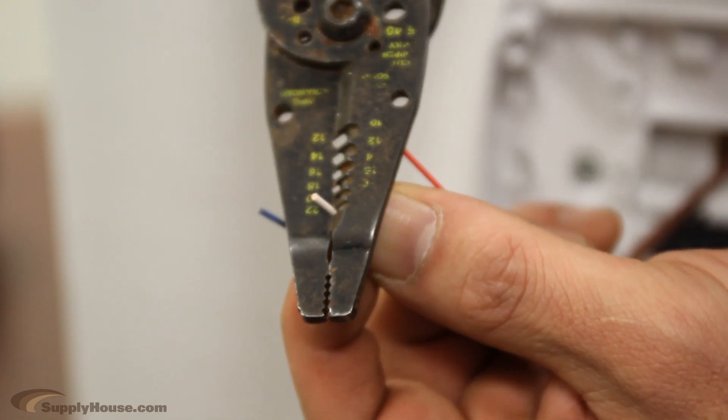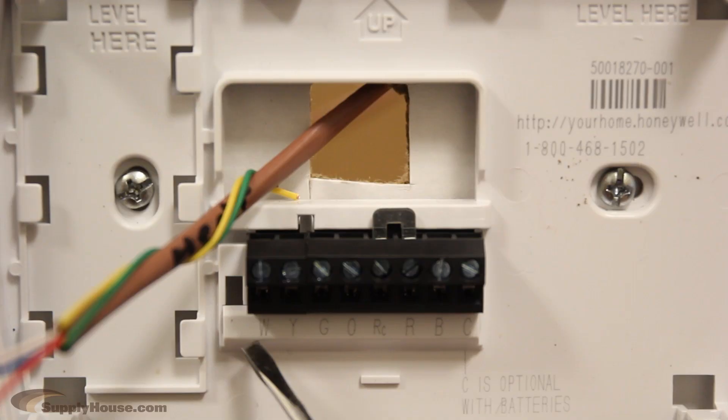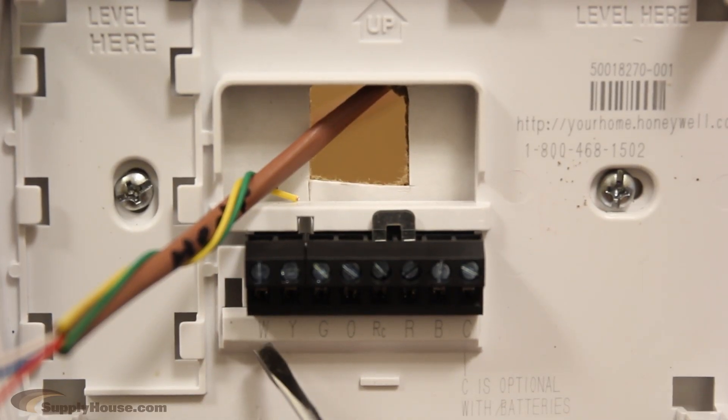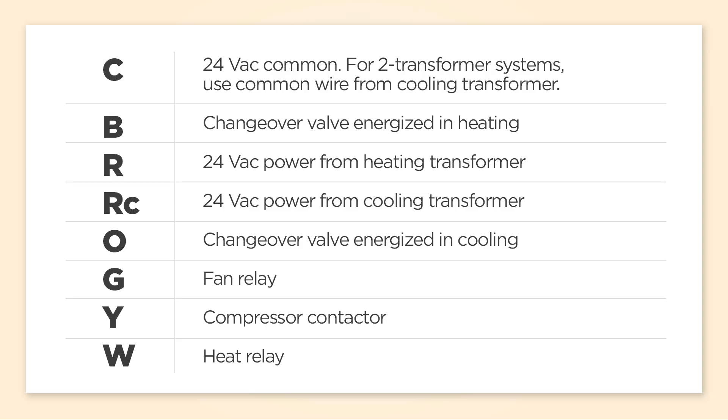Strip off about 1 1/8 of an inch for each remaining wire. You will notice on the thermostat that there are a number of labeled ports. These are the same for all thermostats. You may not use all of them because they are features your system may not have.